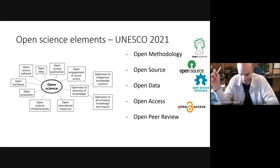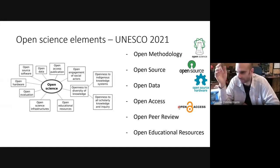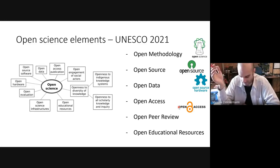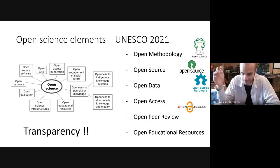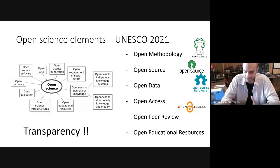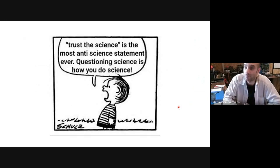The last principle is open educational resources — the belief that all educational resources, whether theoretical, practical, or equipment-based, should be available to everyone. If there is something to remember, it's that open science relies on one big topic: transparency. It is only through transparency that you can share your methodology, assess the methodology of the literature, and actually build your research based on that. Adopting open science principles allows you to question the literature and question your own methodological approach. And I will say: 'trust science' is the most anti-science statement ever — questioning science is how you do science, only better.